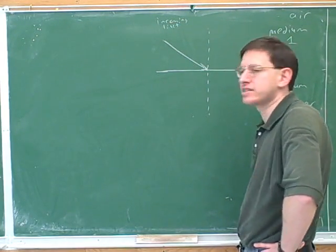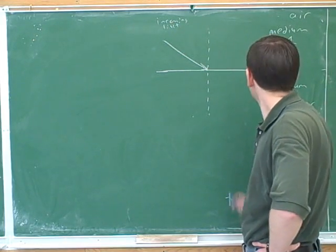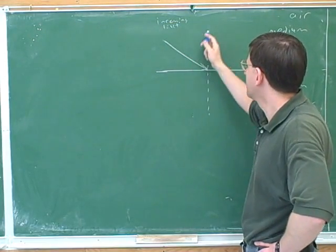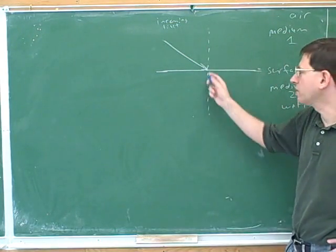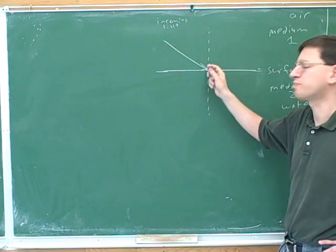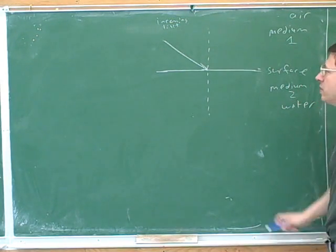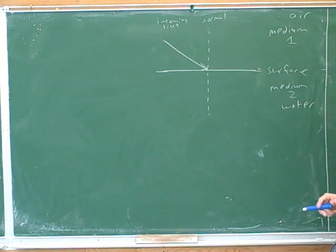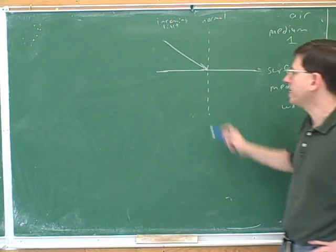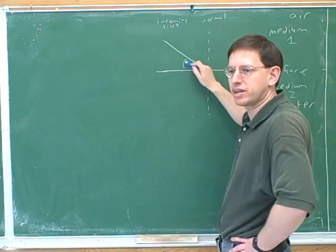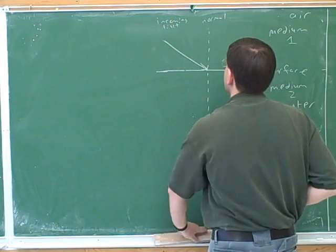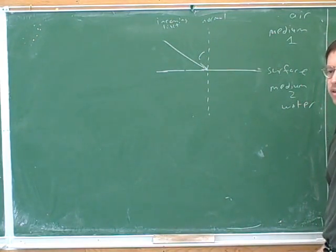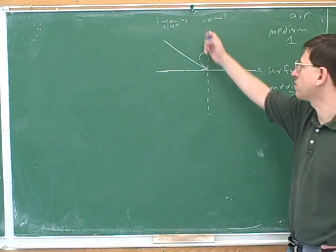Now we need to talk about what the angle of incidence is. This line here is the surface, and this line is the incoming light. What do we call this dashed line? This is what we call the normal — a line that is perpendicular to the surface. In optics, we usually measure angles with the normal, not with the surface. So we have to get into the habit of drawing the normal.